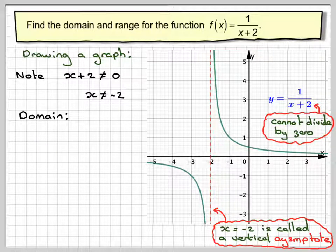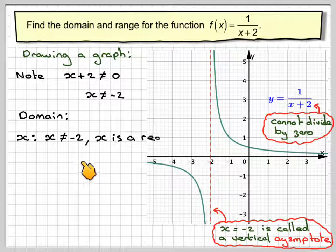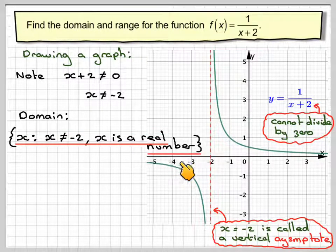So the domain will be x such that x is not equal to minus 2 and x is a real number.